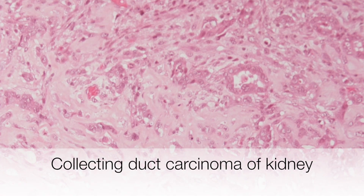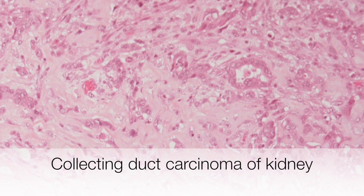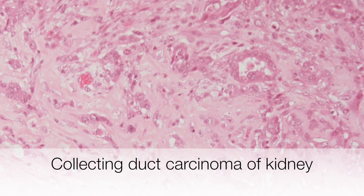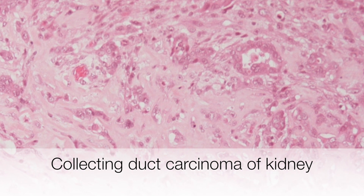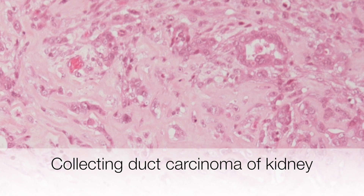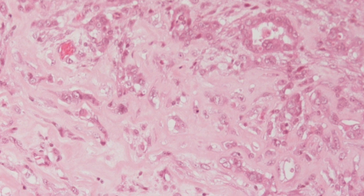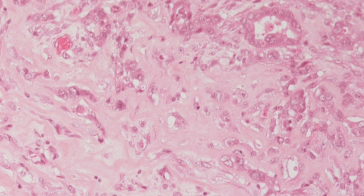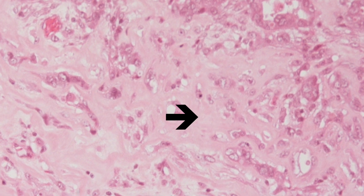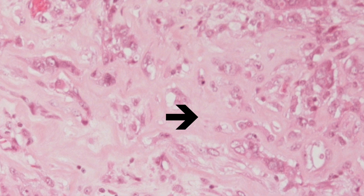Here is another very aggressive tumour characterised by a dense fibrous desmoplastic stroma, and that is a collecting duct carcinoma of the kidney. The desmoplastic stroma is the abundant pink staining, rather featureless tissue.